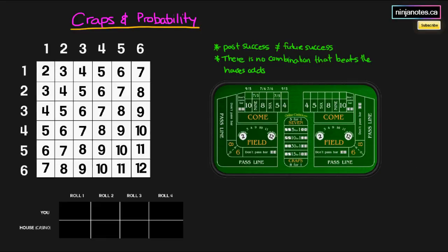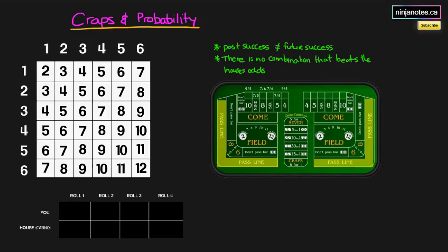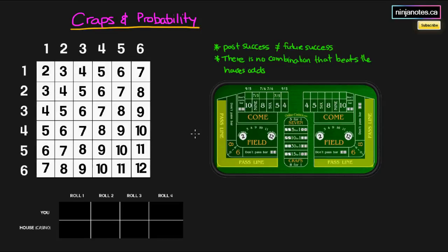The only combination that beats the house is purchasing the casino and betting against gamblers — that is the house. The house always takes an edge to win money in the long term. So let's talk about craps. The most basic bet in this tutorial is the pass line, which I've highlighted. Basically, you throw down some money — say ten dollars — roll two dice, and if you roll a seven or eleven you win, while if you roll a two, three, or twelve you lose.